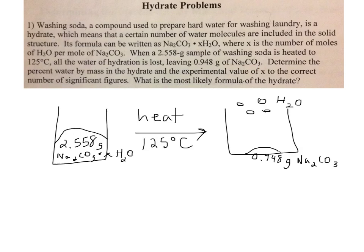I like to start with drawing a picture. Here we have 2.558 grams of Na₂CO₃ · XH₂O — that's the hydrate, Na₂CO₃ with a certain amount of water attached. Then you heat it to 125°C, which is the temperature it takes to get rid of all that water. That water exists as water vapor, and then you're left with 0.948 grams of Na₂CO₃.